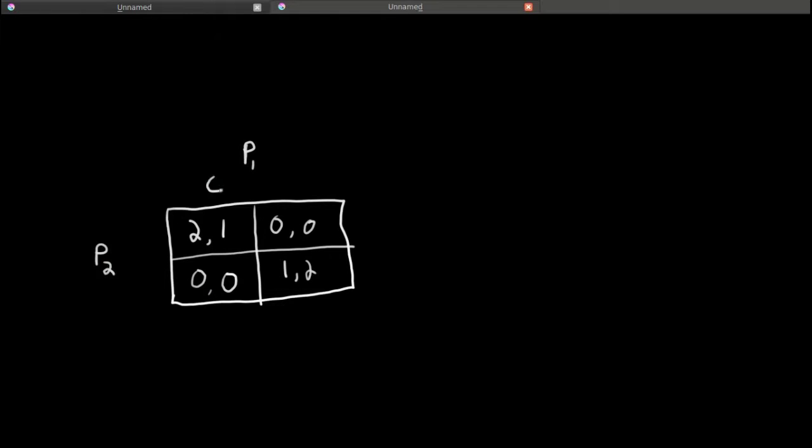What do I mean by this? Let's look at the coordination game again. Remember the story behind this game was that the players, player 1 and player 2, had to meet up. They chose to meet up, but they forgot where they agreed on going, and they can either go to concert C or sporting event S.